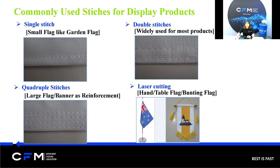Single stitch is mainly for small flags, which is concise and simple. We always use double stitches for most products you can see — for instance, standard 2x3 feet flags, 3x5 feet flags, and advertising flags, etc.